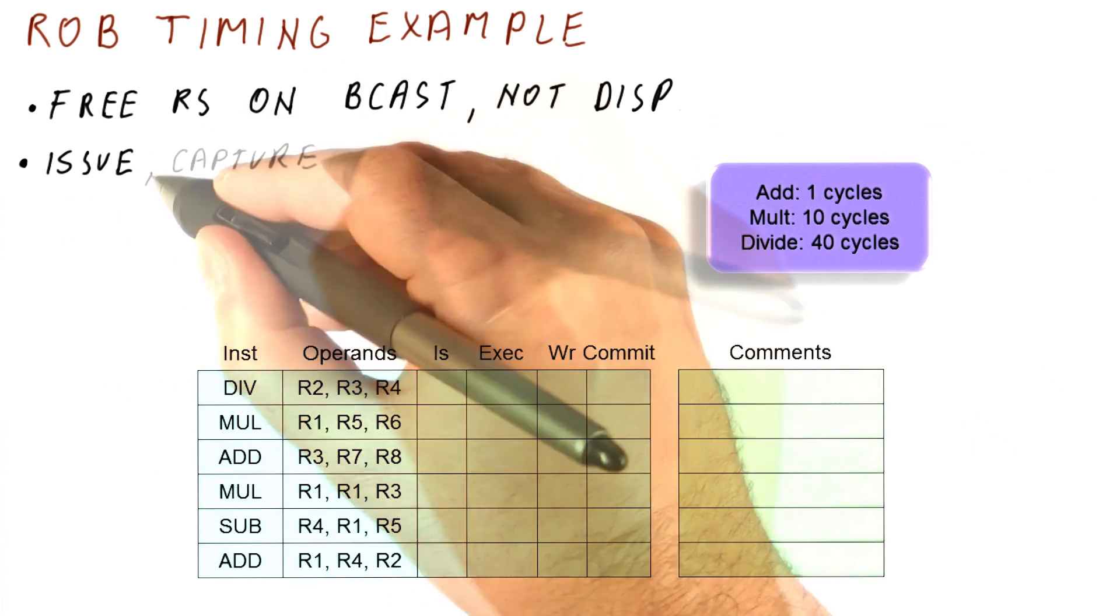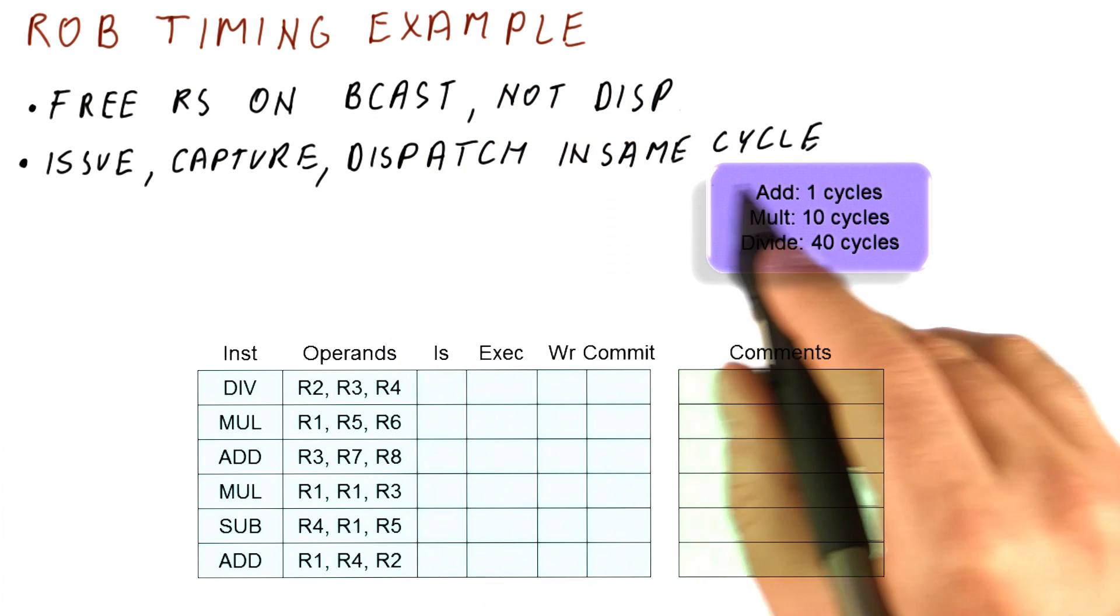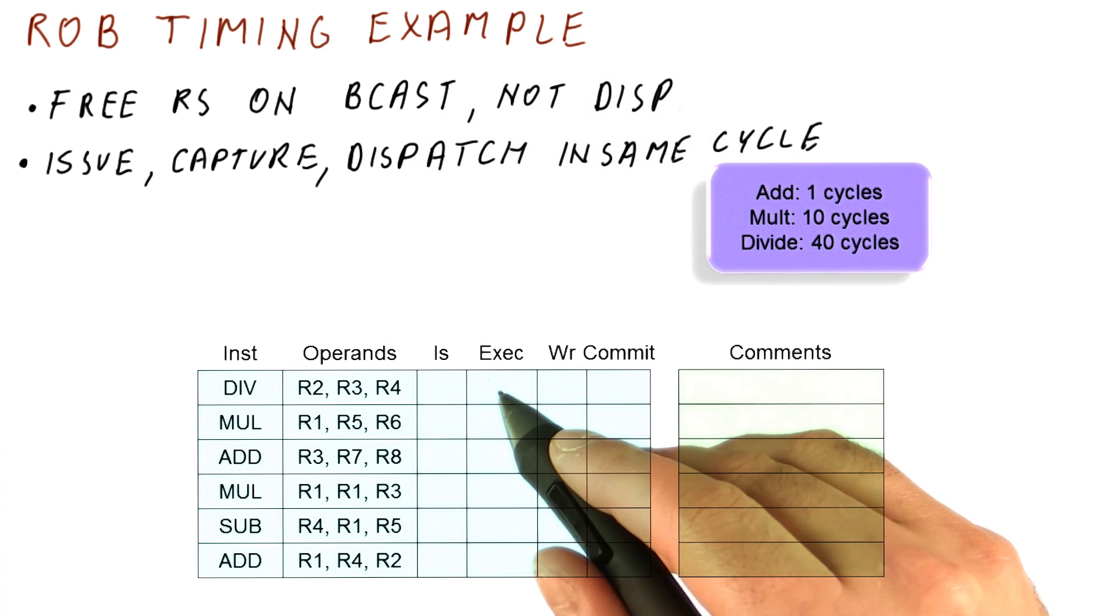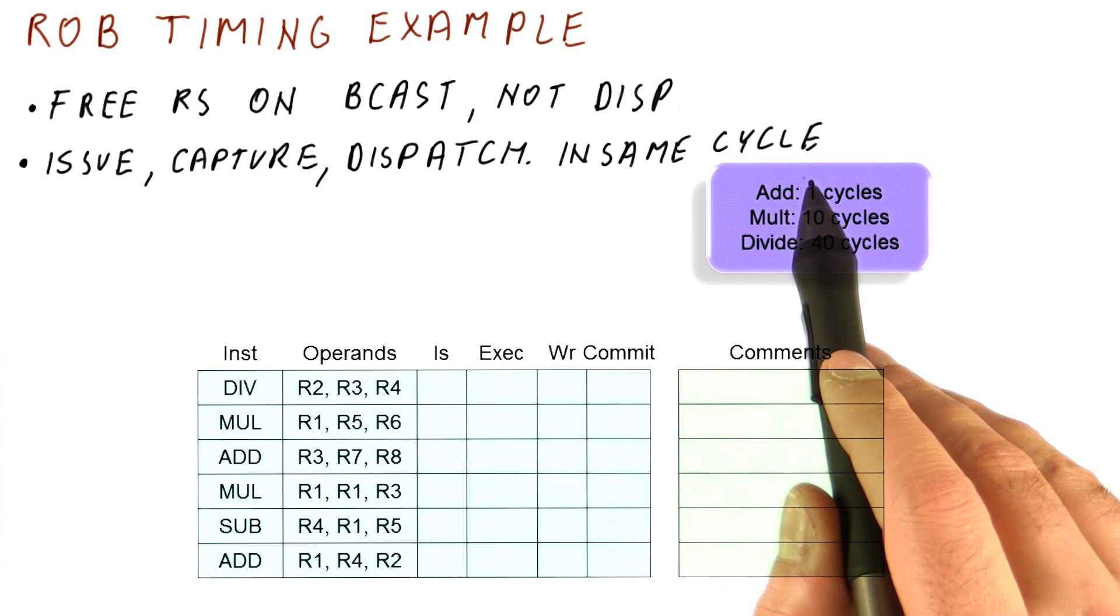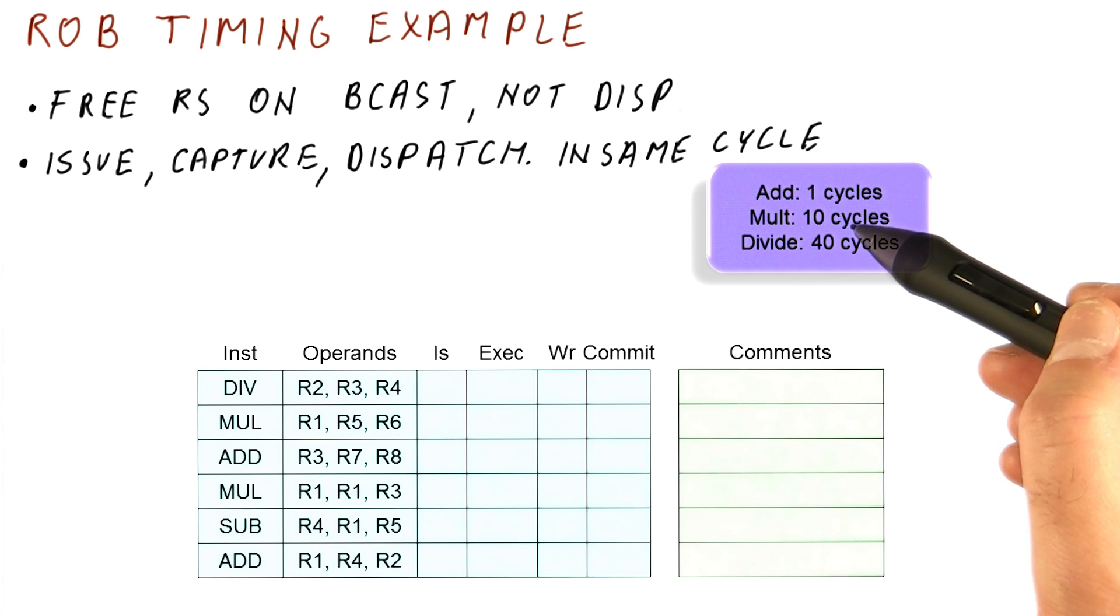The processor can still issue, capture a result, and dispatch the instruction in the same cycle. But the execution will again happen in the following cycle. This is just like the previous processors. And again, we have the add take one cycle, multiplication takes ten cycles, and divide takes 40 cycles.